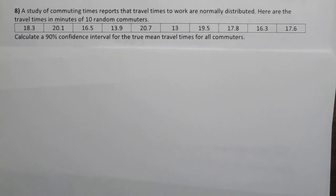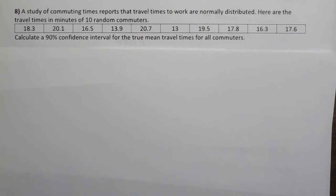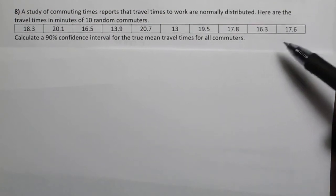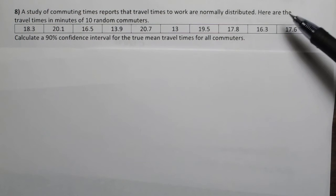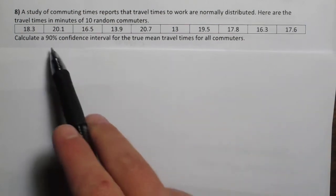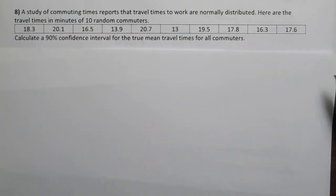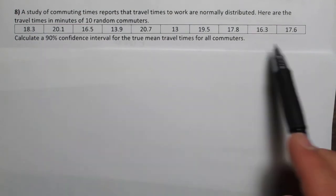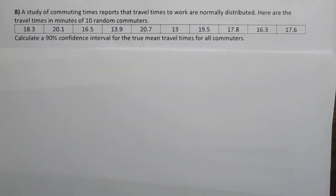In this problem, a study of commuting times reports that travel times to work are normally distributed. Here are the travel times in minutes of 10 random commuters. One thing we don't have here is a standard deviation. We have data but we don't know the population standard deviation, so this is an instance where we're going to want to use a t-interval.